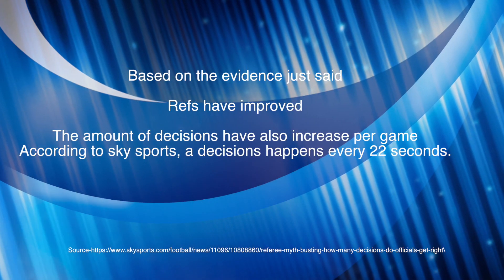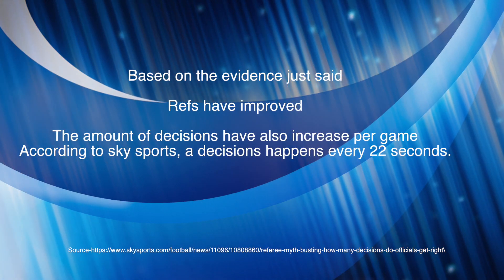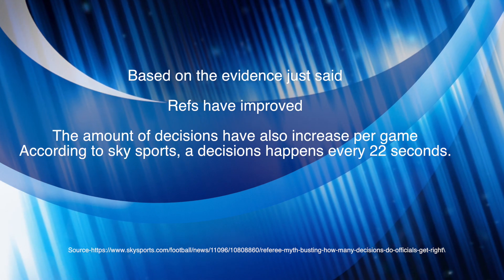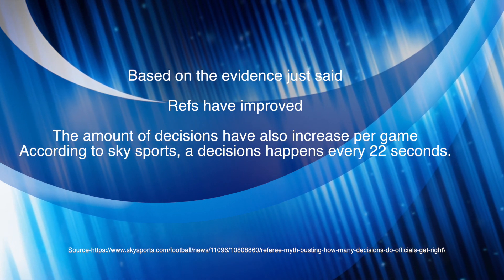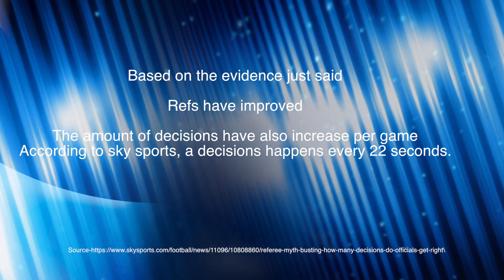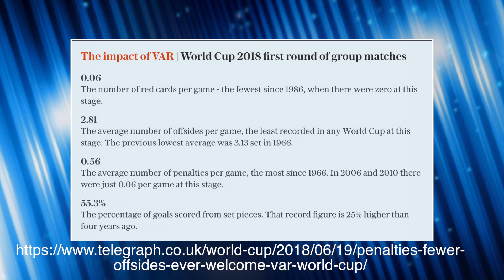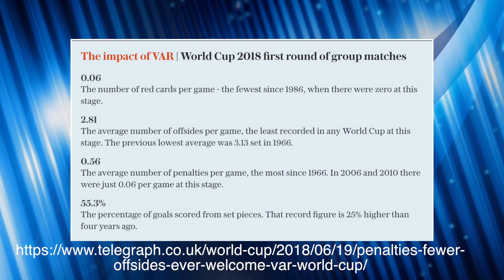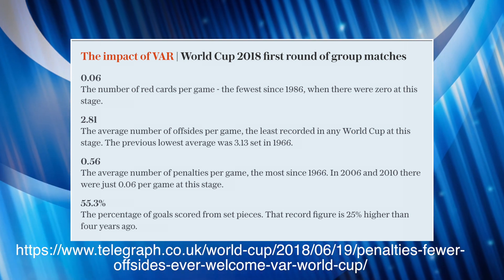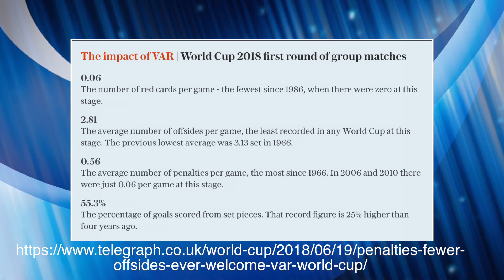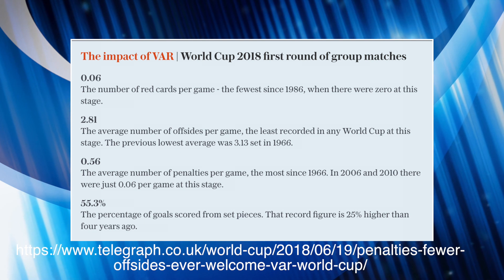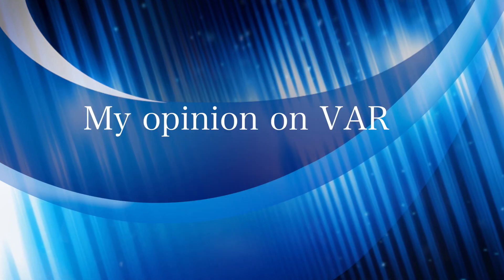After viewing all the evidence, it shows that referees have improved as the years go on, but with VAR it could help prevent them from making any of those big errors which people remember the most. So what were the impacts of VAR in the 2018 World Cup? As you can see from the figures, the amount of penalties per game increased and the amount of goals scored from set pieces also increased.